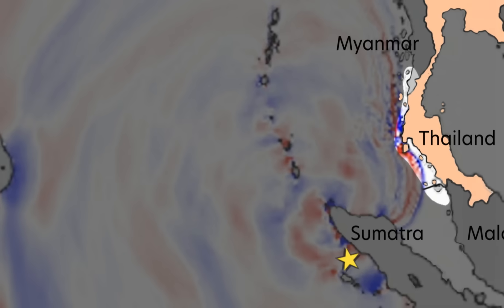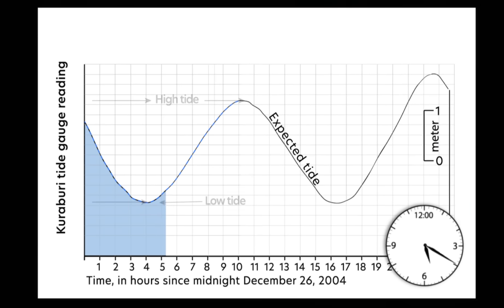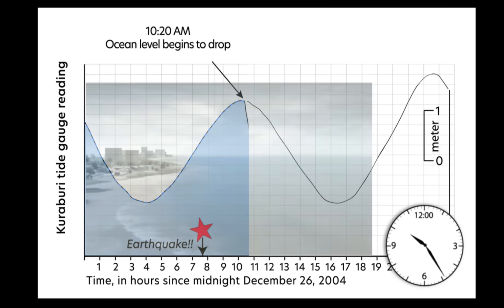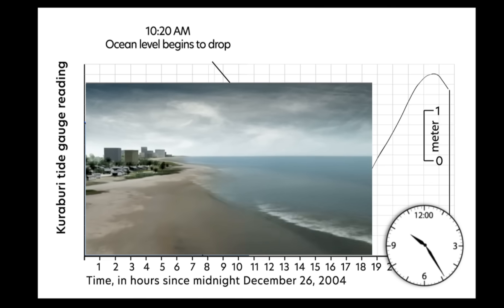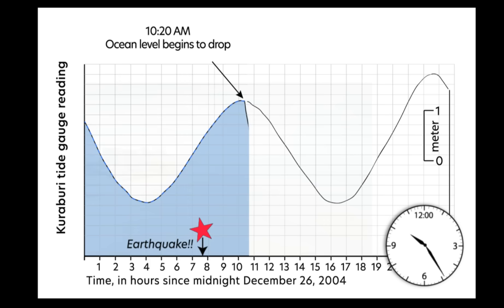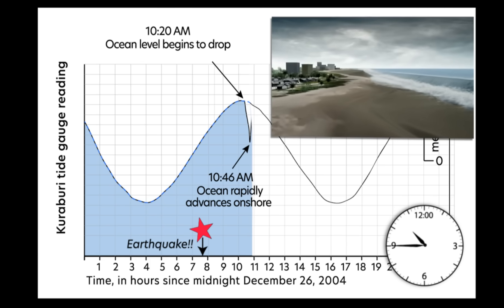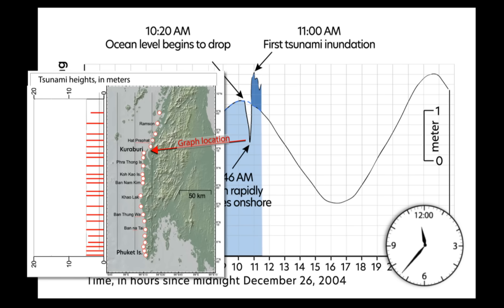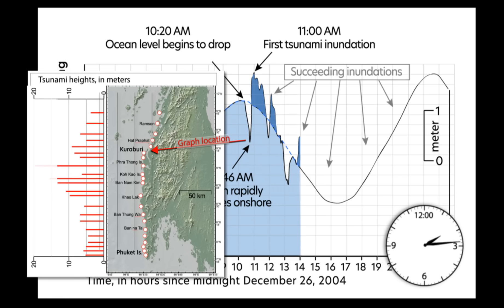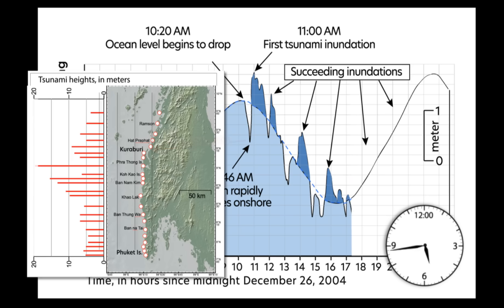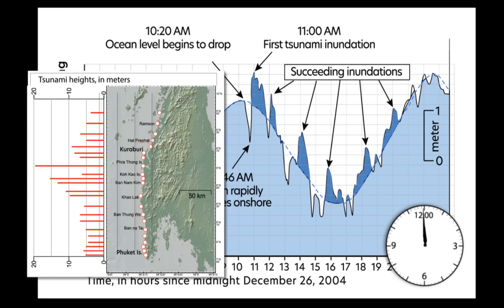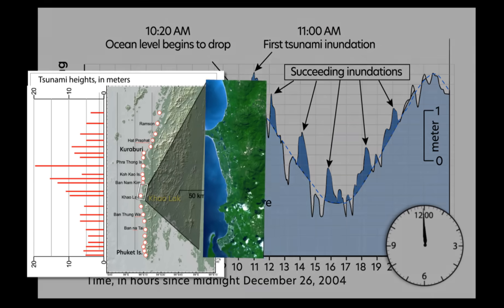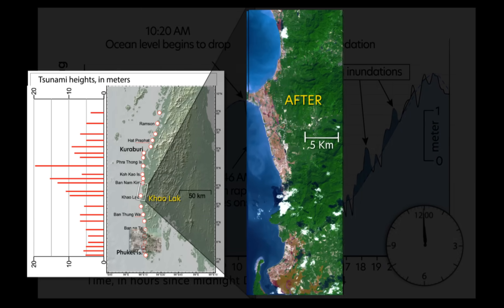In western Thailand, residents and vacationers did not feel ground shaking from the earthquake because they were too far away. When the tsunami arrived about two hours after the earthquake, people on the beaches saw the ocean recede from shore, but very few recognized this drop in ocean level as a natural tsunami warning. Tide gauge records indicate the ocean level dropped for about 25 minutes. Then, over just a few minutes, the ocean rapidly advanced back to and beyond shore as the first wave inundated coastal lowlands. Along the coast from Phuket Island north to Myanmar, a series of withdrawals and inundations followed with tsunami heights from a few meters to almost 20 meters. Because the tsunami arrived at high tide, initial waves produced inundation depths nearly as deep as measured tsunami heights, and tsunami destruction was much worse than what would have occurred at low tide. Comparing before and after satellite images shows coastal lowlands up to 4 kilometers from shore stripped of vegetation and heavily damaged.